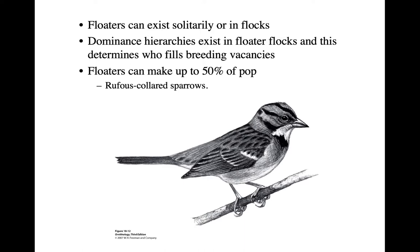A floater is an individual that is not going to be territorial — basically living in marginal habitats on the edges of breeding territories, or sometimes sneaking in among territories trying to utilize resources without being discovered. In many cases these floaters are solitary and trying to hide. In other species, however, floaters form flocks with a dominance hierarchy, and dominant floaters may be the first to take over a territory if a breeder dies. In one study of rufous-collared sparrows, floaters made up about 50% of the population.